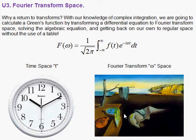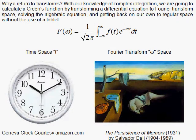Here we have chosen Salvador Dali's The Persistence of Memory from 1931 to represent the transform space. And here we have the Geneva clock. Now the reason why I chose the clock is because we're going to be applying the Fourier transform to a function of time, f of t.